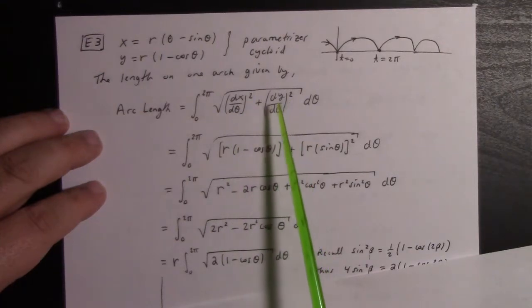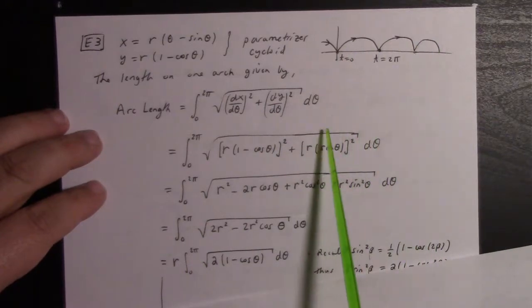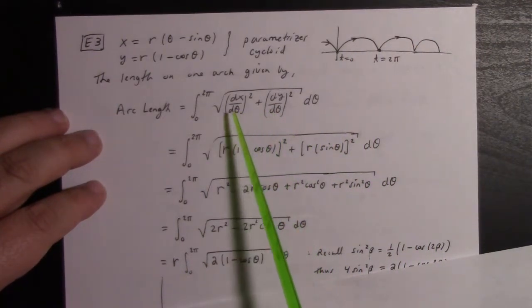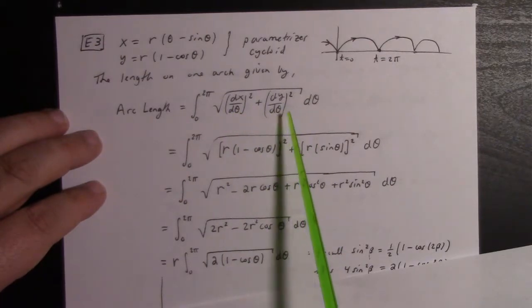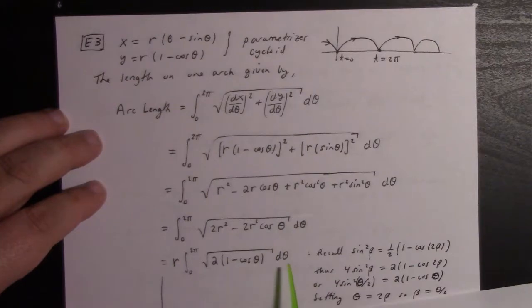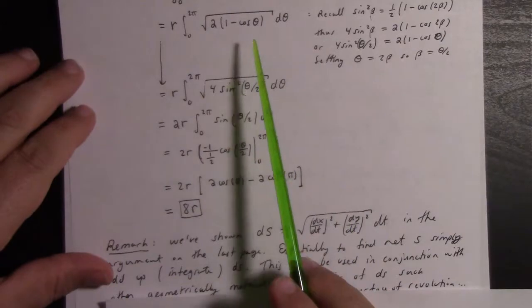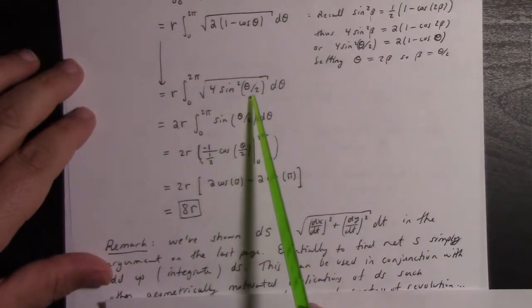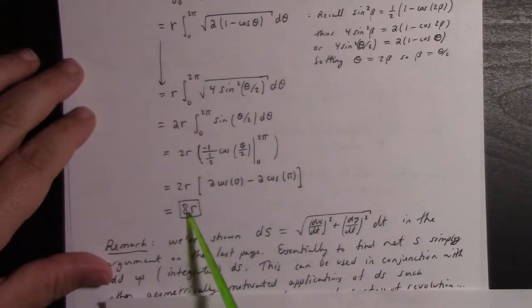So you take the square root of dx/dθ squared plus dy/dθ squared. Here t equals θ. This is the arc length integral. We calculate dx/dθ and dy/dθ, square them, cancel cross terms, and you end up with the integral of (1 - cos(θ)) times 2, which gives 4sin²(θ/2), which integrates to this. Finally, we get 8r.